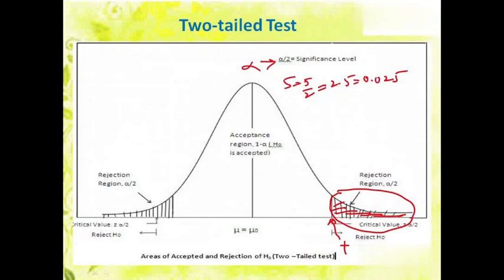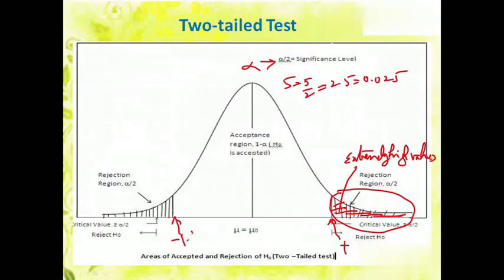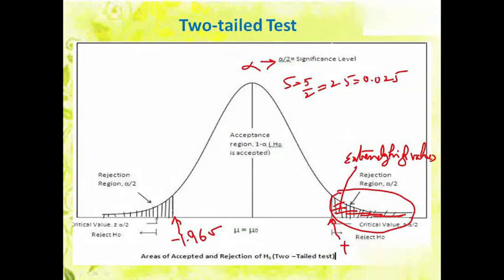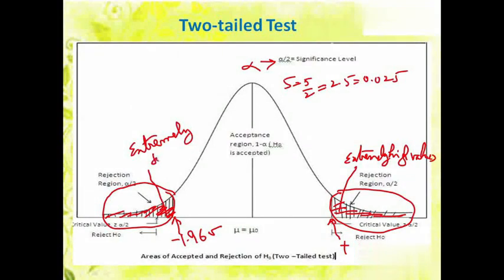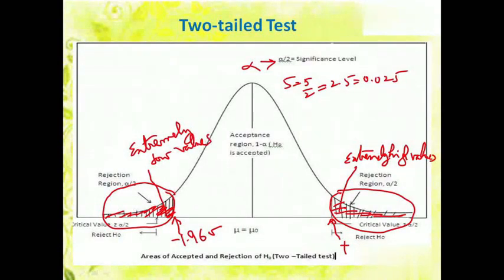Jo bhi values is rejection area mein aayengi, ye extremely high values hain aur ye right side par p-values ke roop mein jaani jaati hain. The critical value of minus 1.96 sigma is on the left side. The rejection area on the left side contains extremely low values, and these extremely low values are also known as p-values.